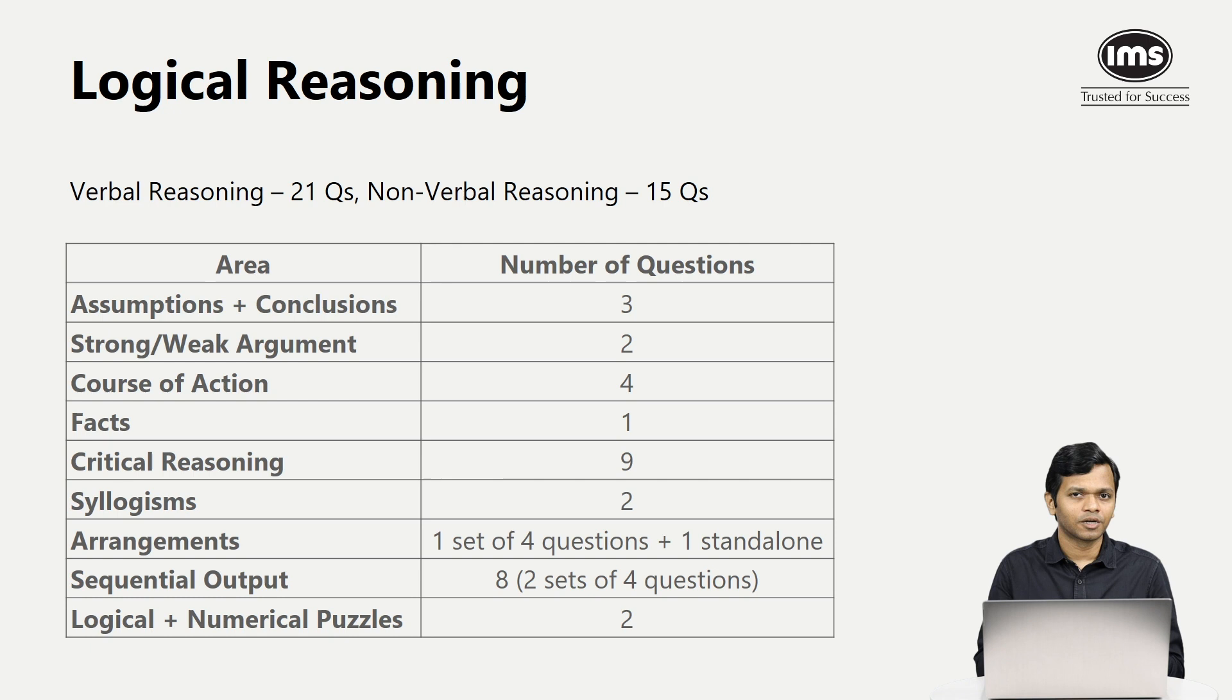There were questions on assumptions and conclusions - three such questions. Strong and weak argument identification - two questions based on this. On course of action, you had four questions and one question on facts. Critical reasoning overall, which is strengthening the argument, weakening the argument and so on, there were total nine questions. So this is the most dominant part of the entire section.